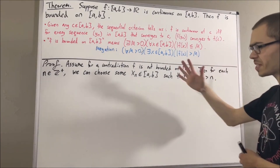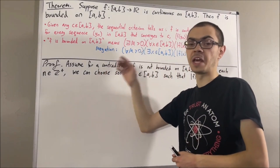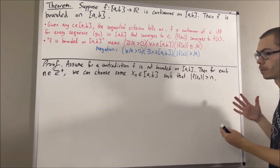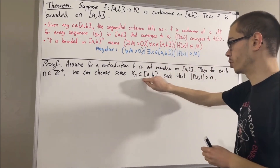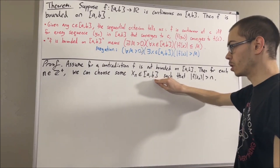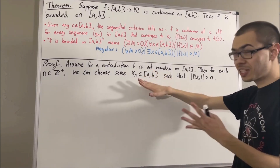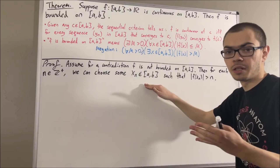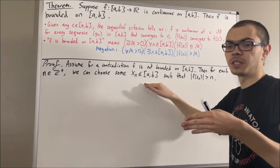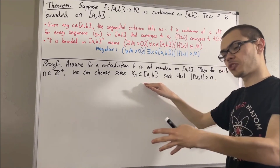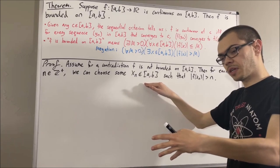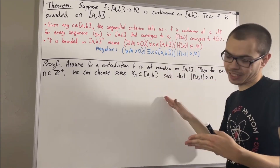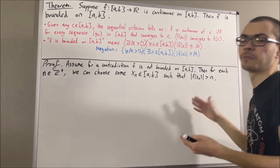This gives us a sequence of real numbers x1, x2, x3, and so on, and all terms of that sequence belong to the closed interval a, b. So certainly this sequence is bounded. Since the sequence is bounded, according to the Bolzano-Weierstrass theorem, there must exist a convergent subsequence xn1, xn2, xn3, and so on.